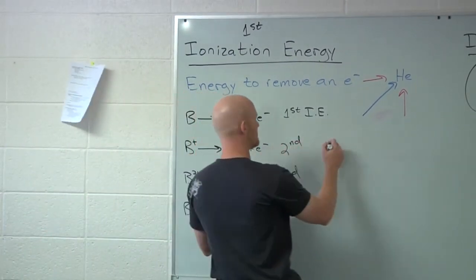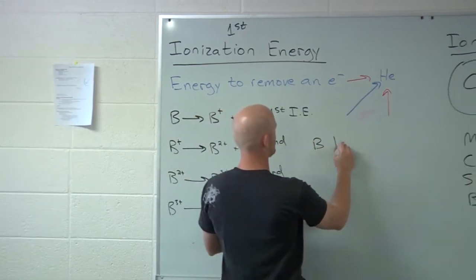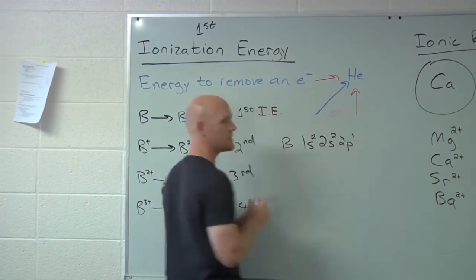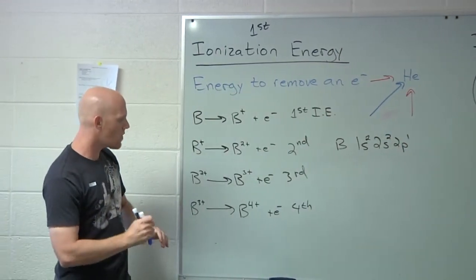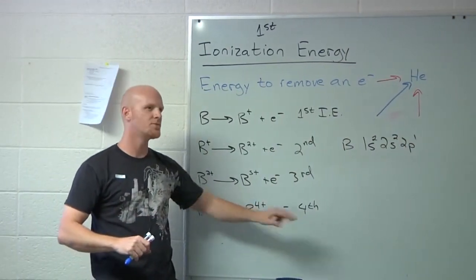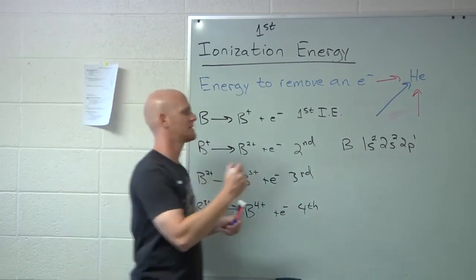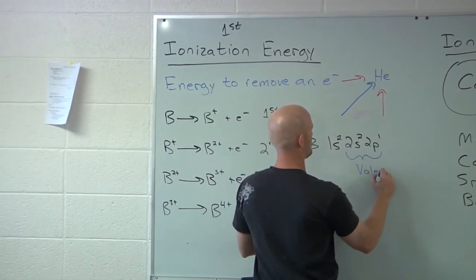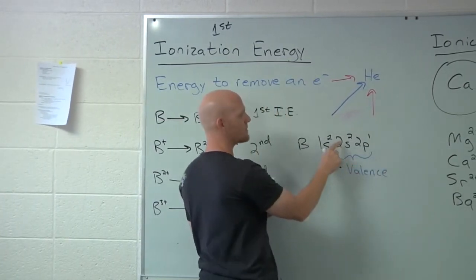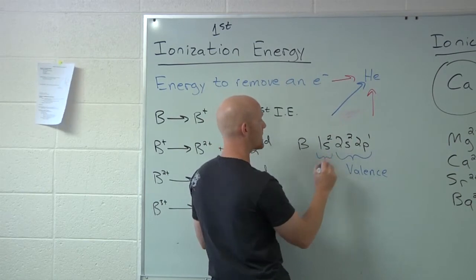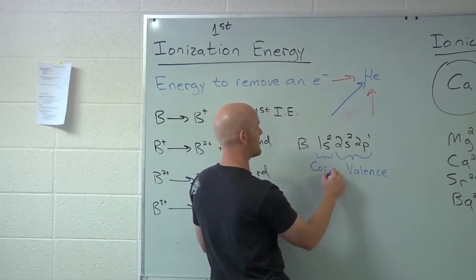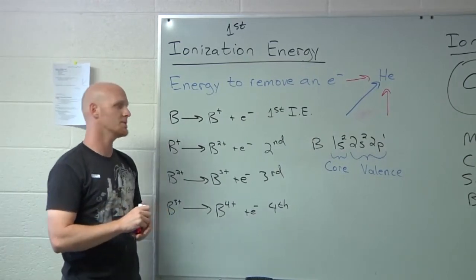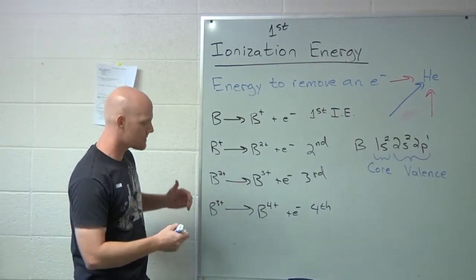If we look at boron, plain old original boron here, is 1s2, 2s2, 2p1. Why is it so much more difficult to pull off a fourth electron? Once I've pulled off three electrons, I've pulled off all three of the valence. If I want to pull off a fourth electron though, that's going to be a core electron, and those are much more difficult to remove.